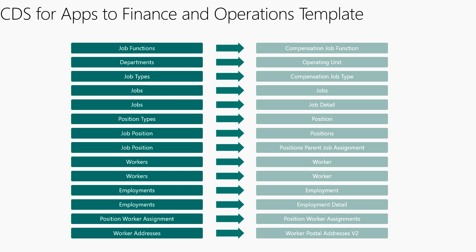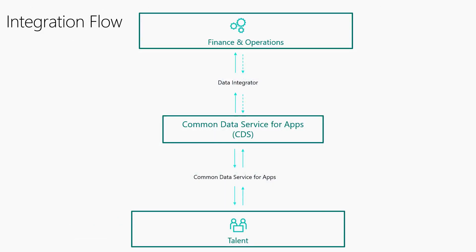This is what the template looks like from a higher level — not individual fields, but the overall mapping. There are 13 or 14 different tasks within the template. The template can be modified; it provides a base to get a base worker moved across into Finance and Operations. If you have custom entities on the Finance and Operations side, or custom fields you've created in Talent, you can update the template to move that data across as well.